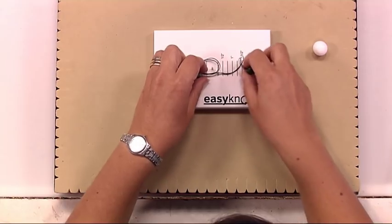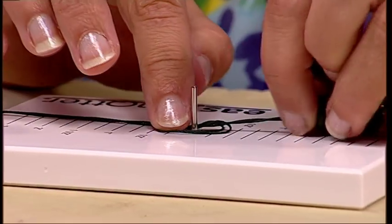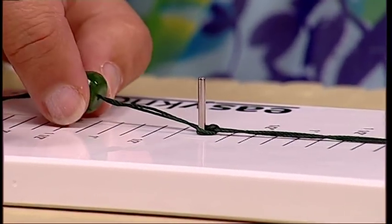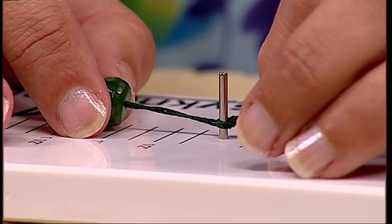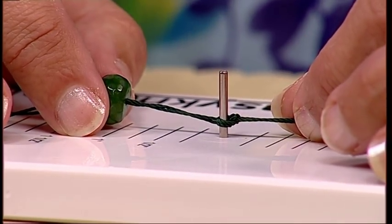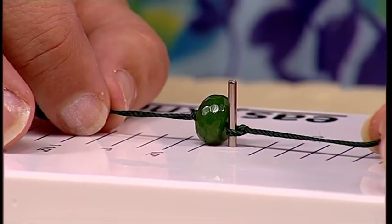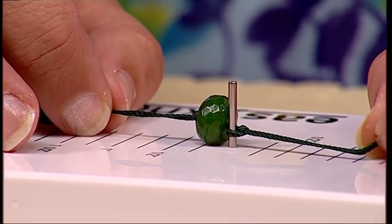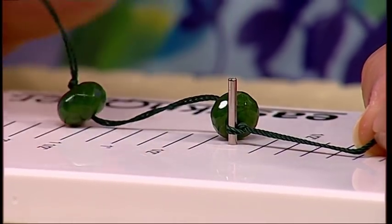Put the knot back over the center and pull until it's the desired length. If you want the knot right up against the bead, pull until the bead is against the knotting pin.